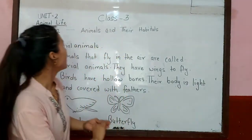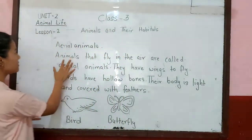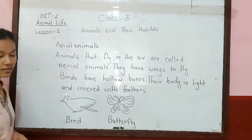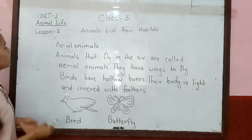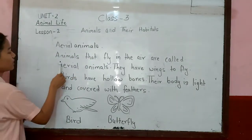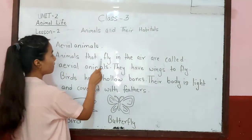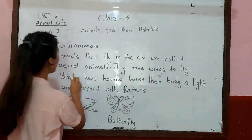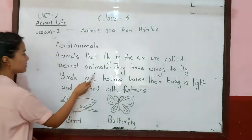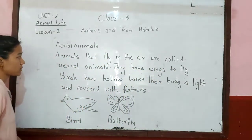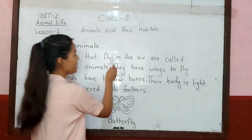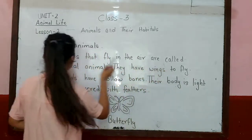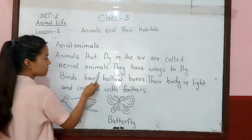We have already learned about two types of habitats — land animals and water animals. Now here are aerial animals. Animals that fly in the air are called aerial animals.